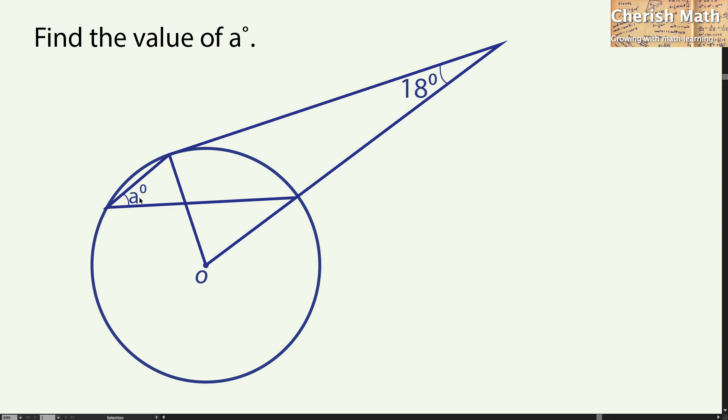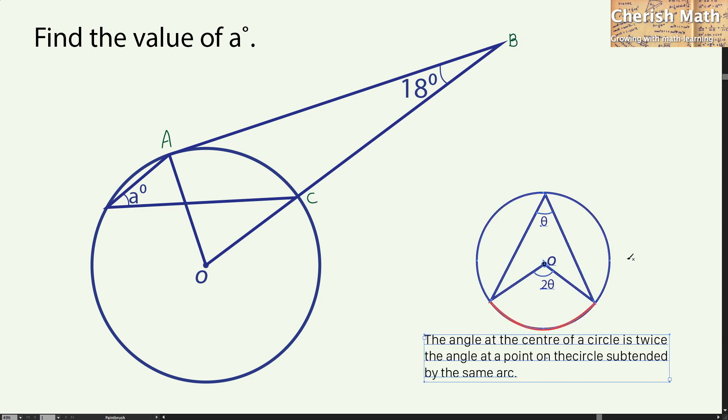In the first step, I'm going to label point A, point B, and point C. I'm going to use this theorem located on the right-hand side to solve the problem.